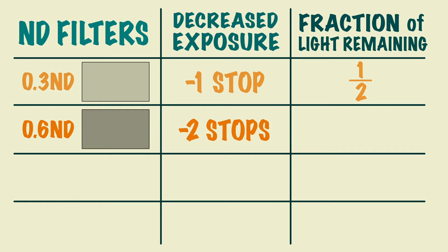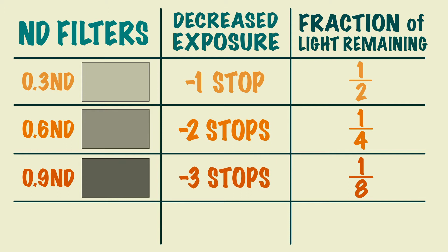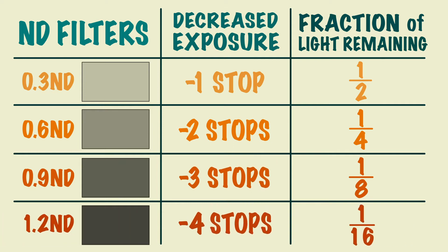When two stops of light are taken away, this means that the light is halved and halved again, so one quarter of the light remains. The same goes for using a 0.9 ND. This would leave you with one eighth of the light you started with, as the light is halved three times. This is why the internal filters are labeled in fractions on some cameras, as this represents the amount of light remaining after the filter is applied.